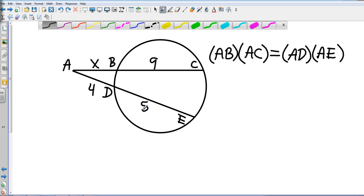So let's substitute those values. AB is X, I'll leave everything in parentheses. AC, the whole thing, is going to be X plus 9. AD is 4, and in this case AE is going to be 9. So that gives me, I do distributive property again, X squared plus 9X equals 36.